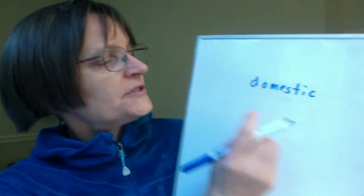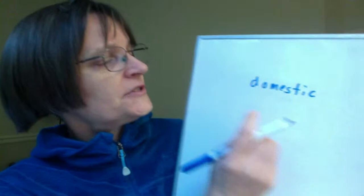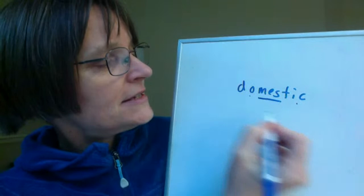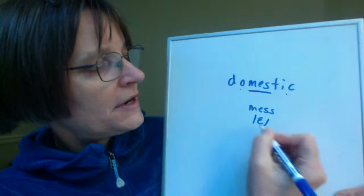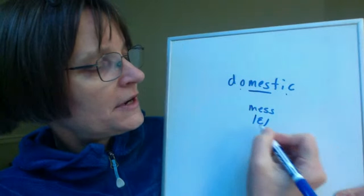Let's start with looking at which syllable is stressed. We have second syllable stress here: 'domestic.' So 'mess' is longer — it's the same as the word 'mess' and has the vowel 'eh.' So we're going to think of that as being the 'red tent' vowel.